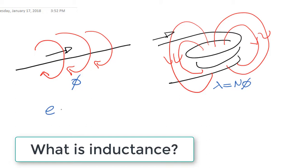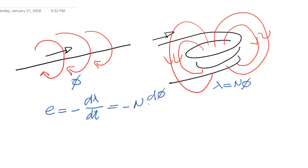Where we say, whenever the flux changes, the flux linkages change, and we have an induced voltage that is proportional to how quickly those flux linkages are changing with time. We have seen that, right?